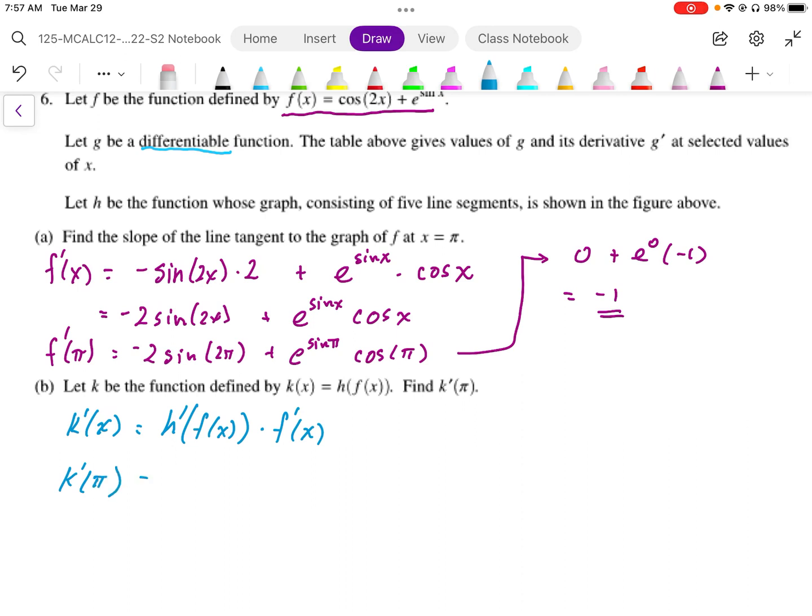So at pi, I need to evaluate this. So this is h prime of f at pi times f prime at pi as well. So I have the f prime at pi already defined. So I know that f prime at pi. Maybe I'm just going to clarify this up here. f prime evaluated at pi is equal to negative 1.